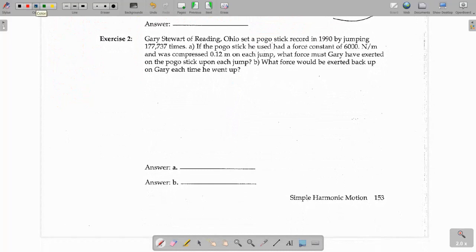Number two, it says Gary Stewart of Redding, Ohio set a pogo stick record in 1990 by jumping 177,737 times. Part A, if the pogo stick he used had a force or spring constant, terrible underline job there, of 6,000 newtons per meter. Let's go ahead and write that down.